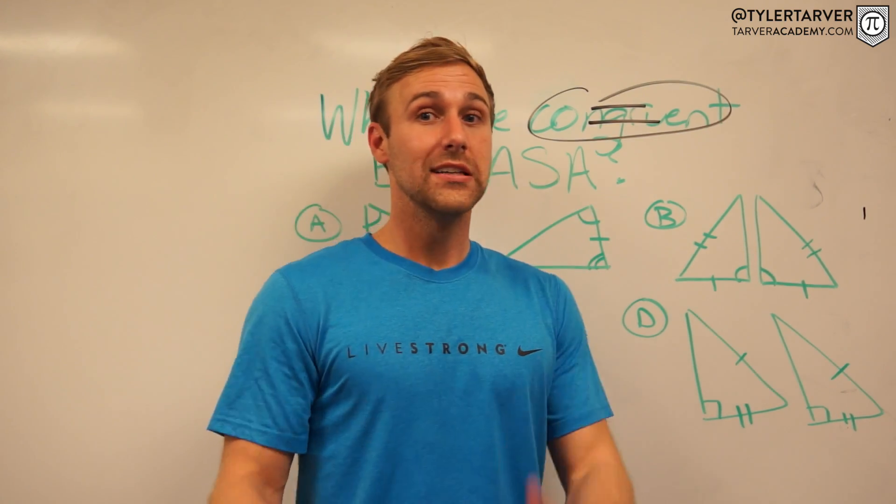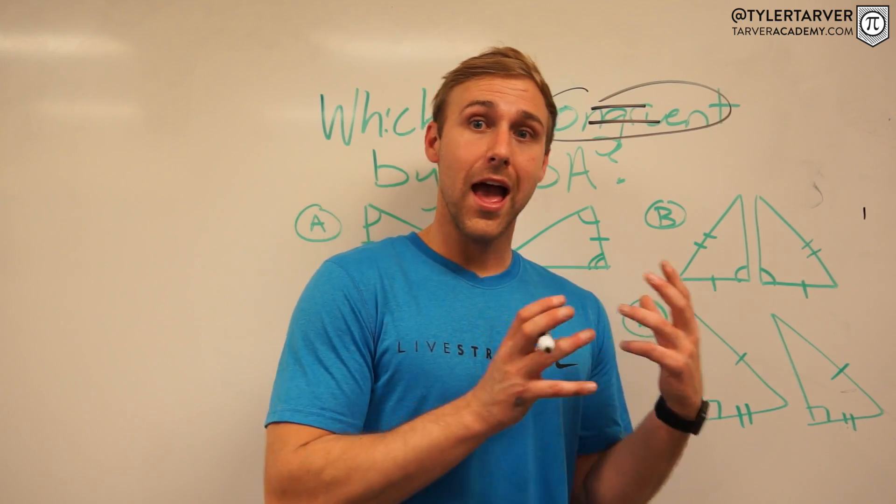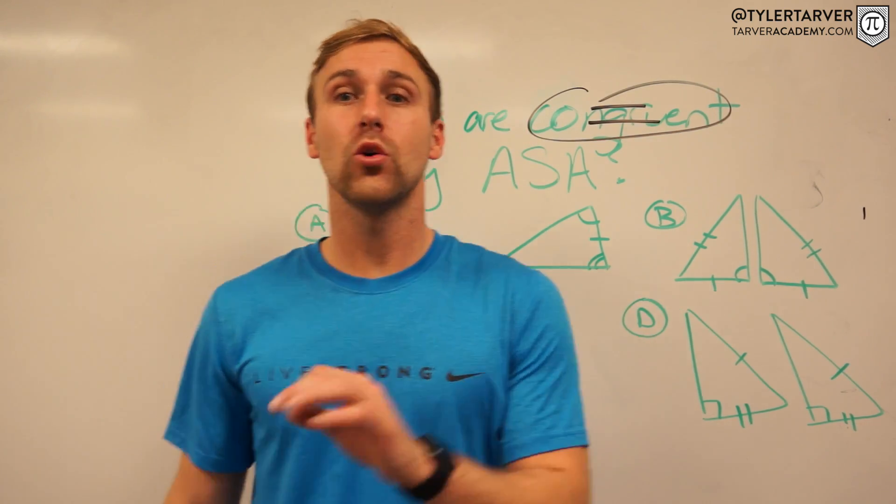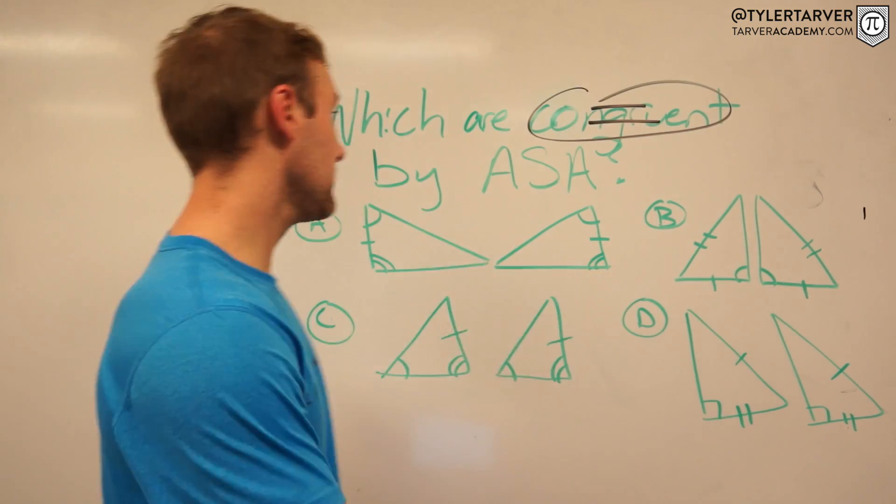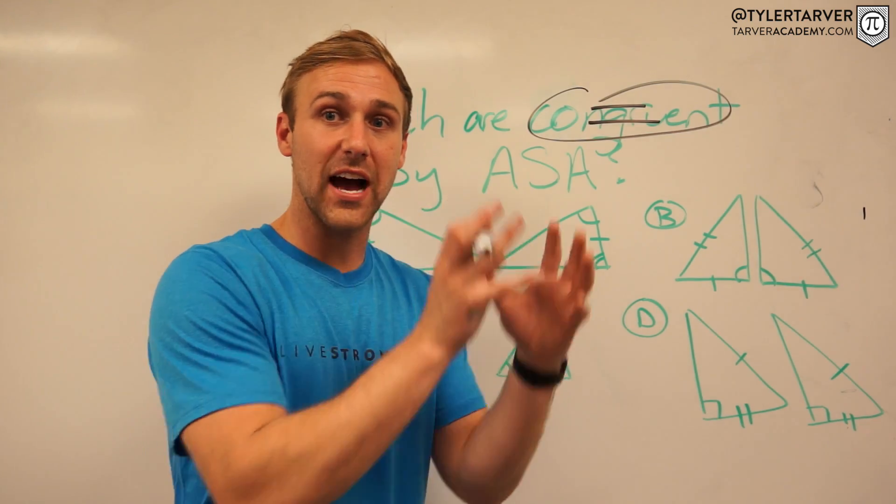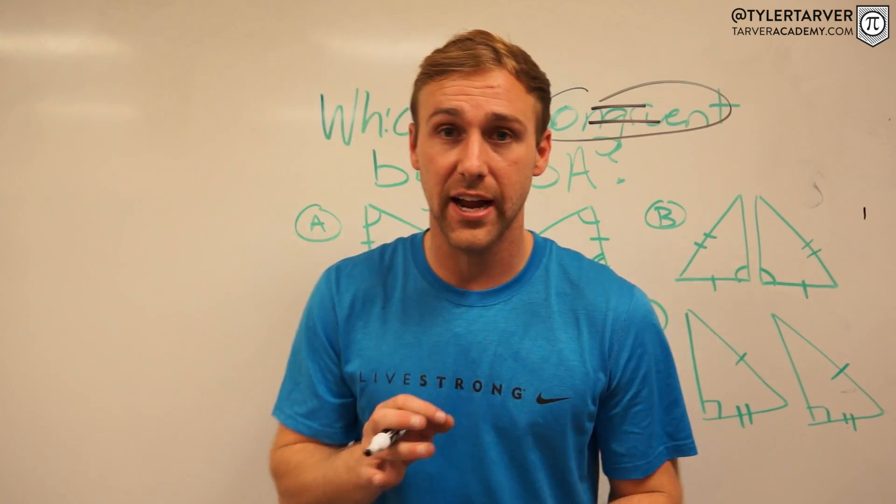Angle, side, angle. Okay, it's a triangle congruence property. Angle, side, angle. Okay, so we're essentially looking for which triangles have angle, side, angle. Now here's the deal with angle, side, angle.